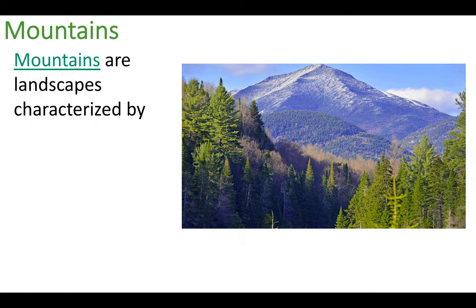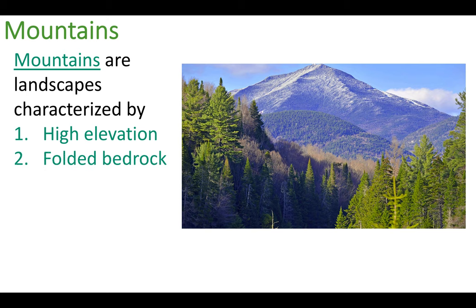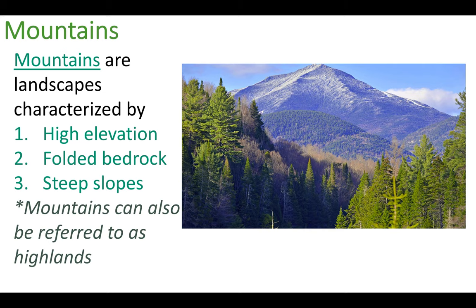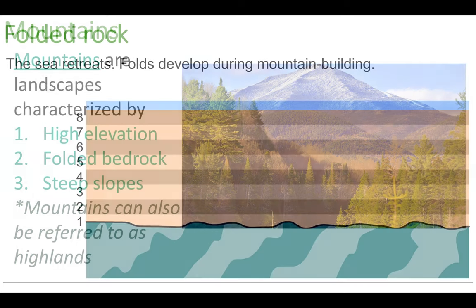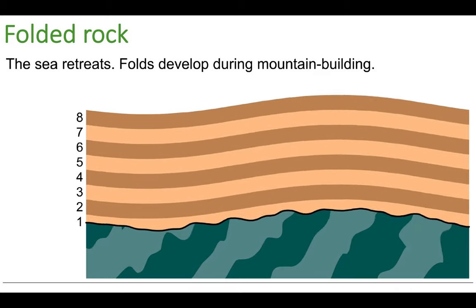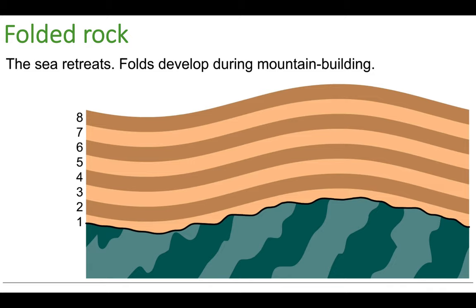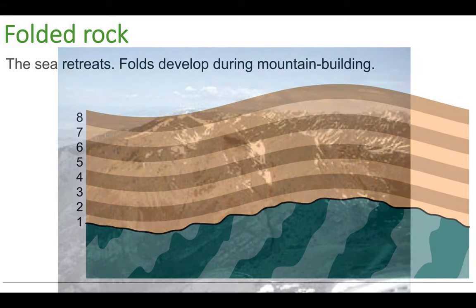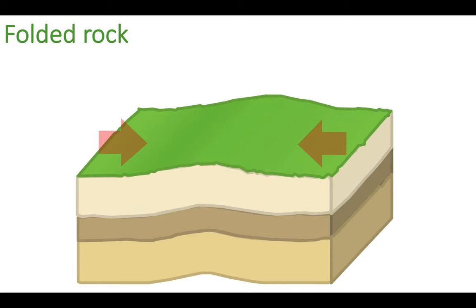Finally, mountains — we also have mountains in our great state. They are characterized by three things: high elevation, folded bedrock, and steep slopes. Mountains can also be referred to as highlands. Folded rock is a new term — when mountains form, two continental masses collide and the bedrock folds. Looking at this animation, those layers of rock are no longer perfectly horizontal; they are folded like folding a piece of paper or a blanket — no longer completely straight.